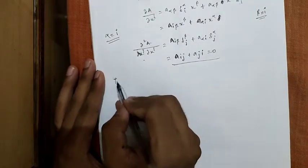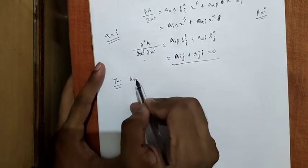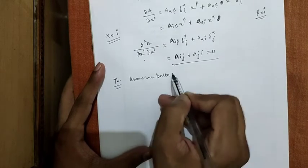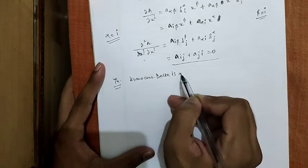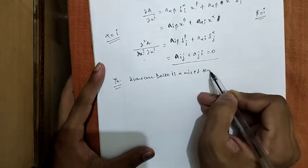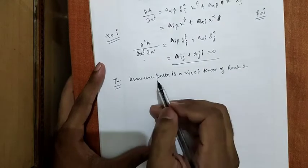Now, going to the theorem: Kronecker delta is a mixed tensor of rank 2.